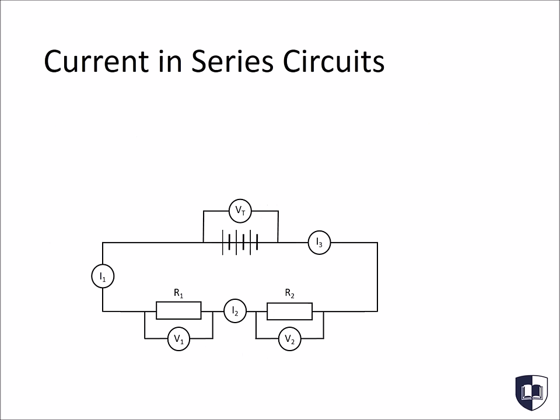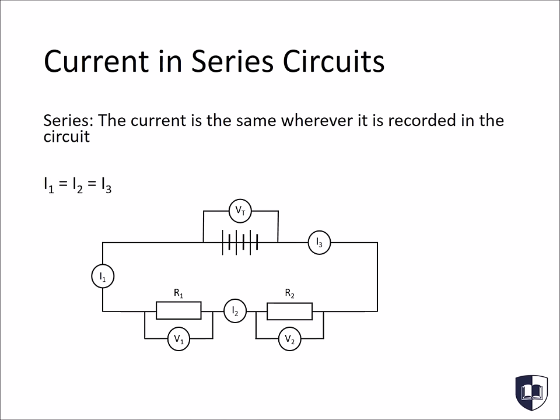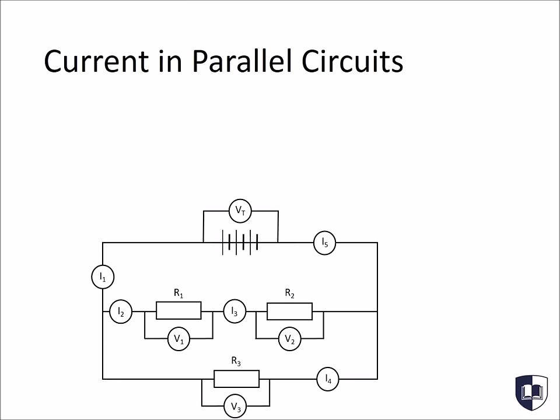One of the laws of electrical circuits is that in a series circuit, the current will be the same wherever it is recorded in the circuit. So, if we look at this circuit here, the current recorded at I1 is the same as that at I2, which is the same as that at I3. In parallel circuits, however, it gets a little more complicated. The current which enters and leaves at any branching point is equal. So the current after a branch point must equal the sum of the current before the branching point.